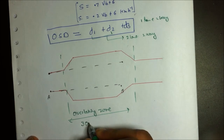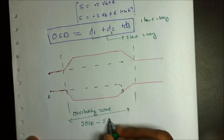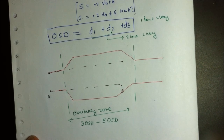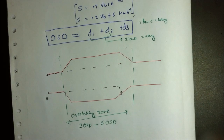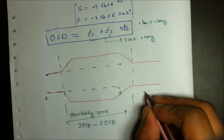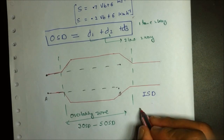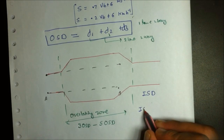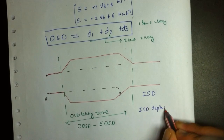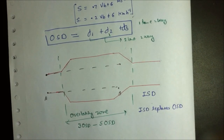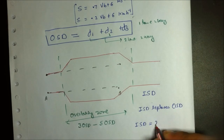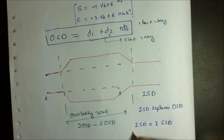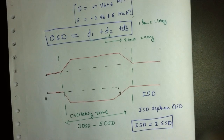The overtaking zone spans from 3 times the calculated OSD to 5 times the calculated OSD. In certain conditions where the road cannot be widened enough, the intermediate sight distance (ISD) replaces OSD. The ISD equals 2 times the stopping sight distance (SSD), which was calculated in a previous lecture.